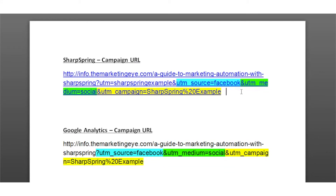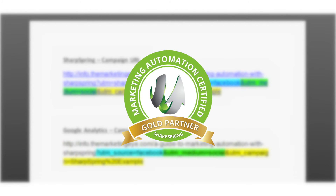Other than that, you're good to go — this is a URL you can now use to track campaigns. Want to get the most from SharpSpring? The Marketing Eye is a gold certified SharpSpring agency helping dozens of businesses harness the power of marketing automation. Make sure you subscribe to our channel for more tips and advice.